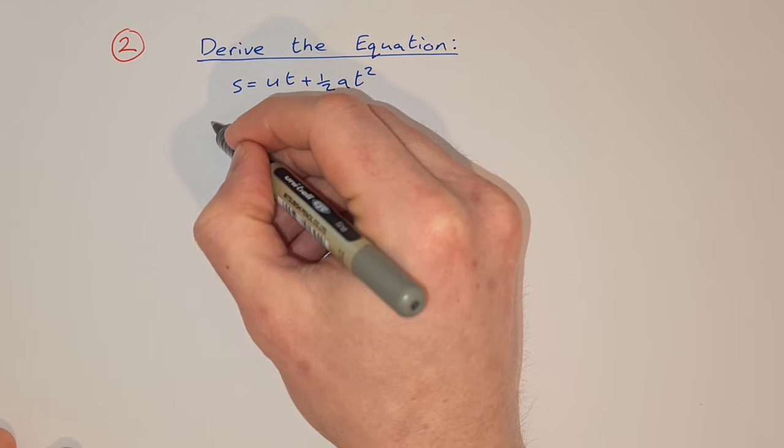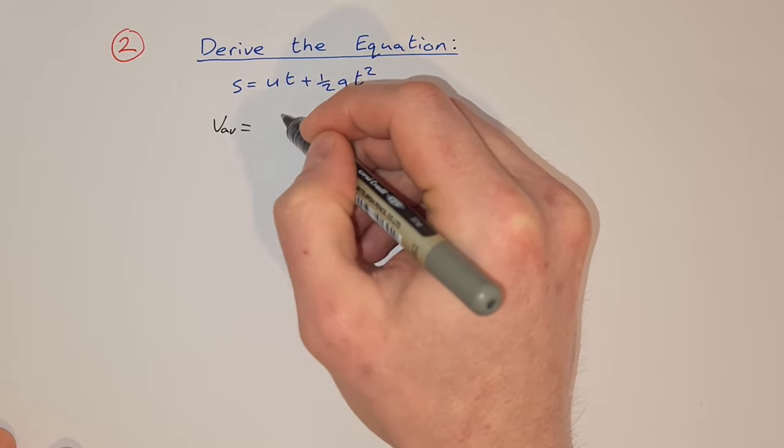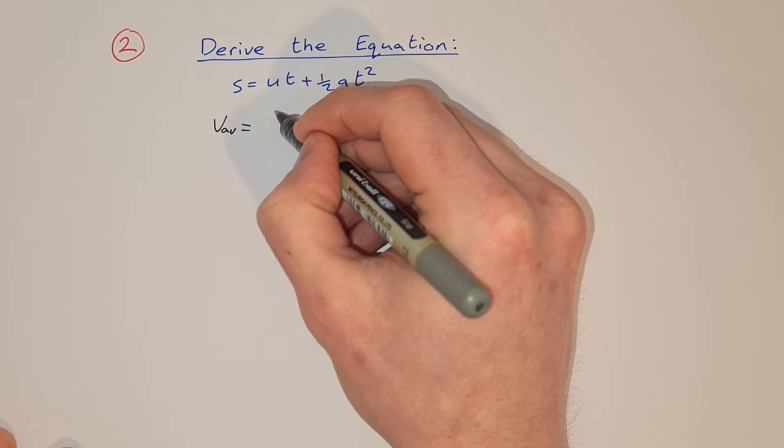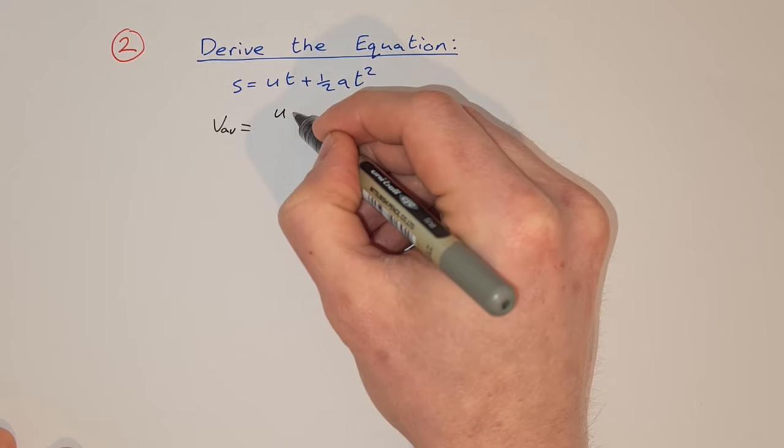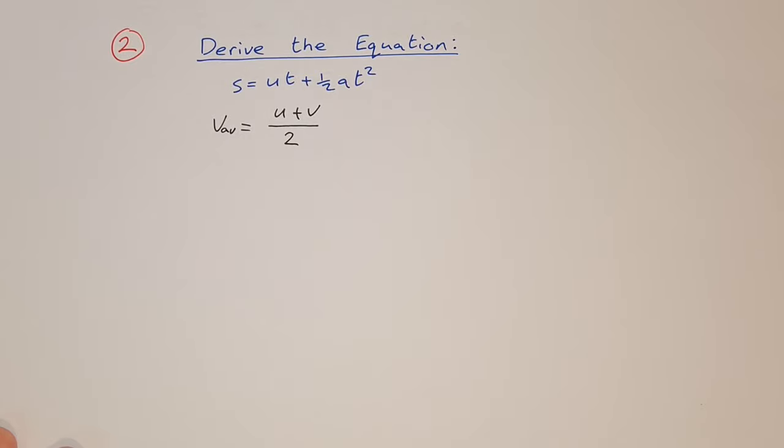we're going to say that the average velocity, v average, is equal to the initial velocity, which is u, plus the final velocity, which is v, over 2. So that's the average velocity.